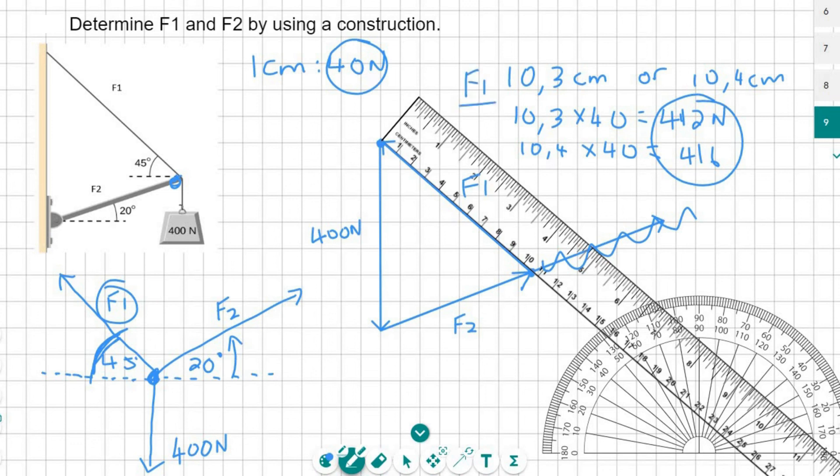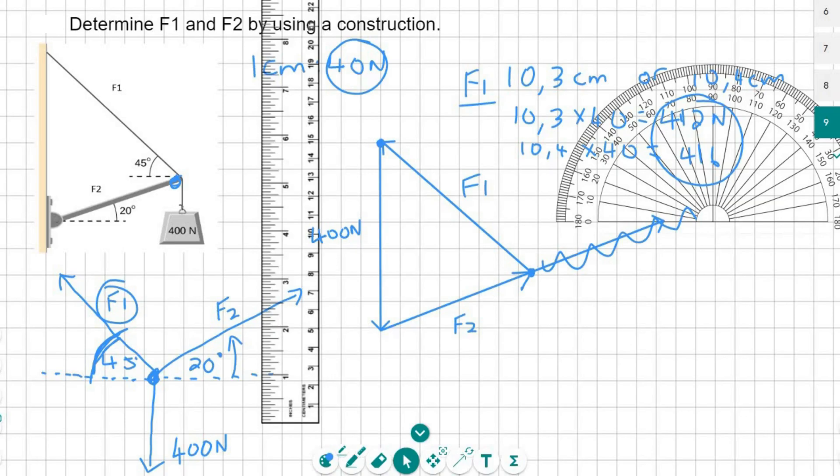Now for F2, then when I measure the length of F2, so I took my ruler and I measured F2, I got about 7.9 centimeters. So if you multiply that by 40, because of the scale, you get about 316 newtons.